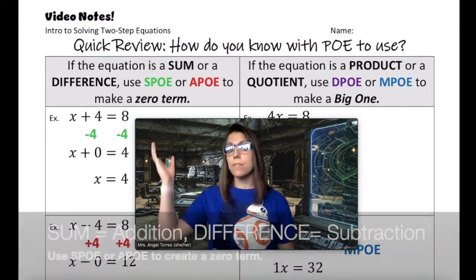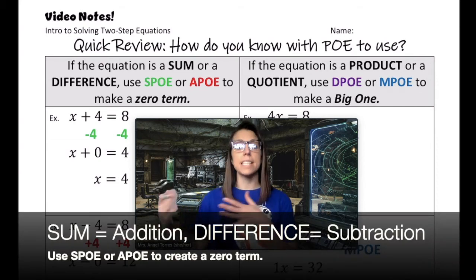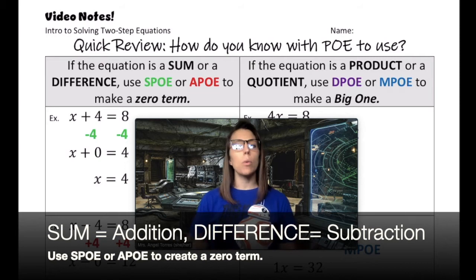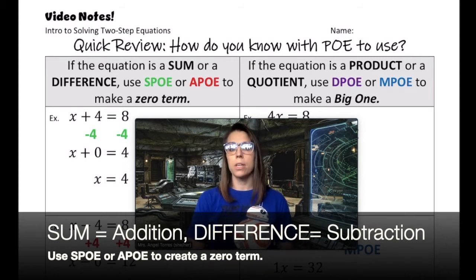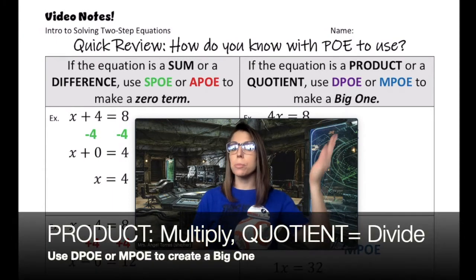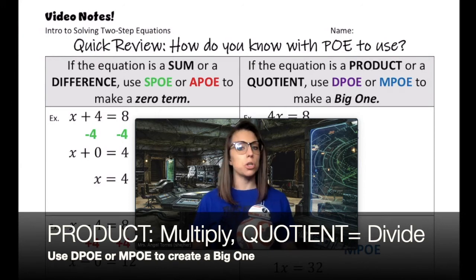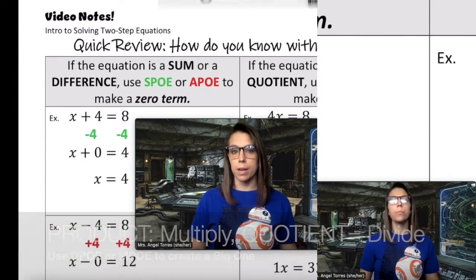If the equation is a sum or a difference, meaning it has addition or subtraction, we're always going to use SPO or APO — subtraction or addition property of equality — to make a zero term. If the equation is a product or a quotient, meaning multiplying or dividing, we're going to use DPO or MPO — division or multiplication property of equality — to make a big one.